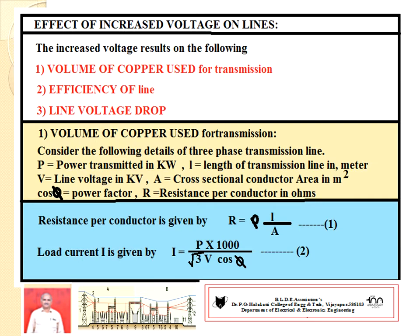For the volume of copper required for a transmission line, consider the following: a three-phase transmission line where P is the power rating in kilowatts, L is the length of the transmission line in meters, V is the line voltage in kilovolts, A is the cross-sectional area of the conductor in square meters, cos φ is the power factor, and R is the resistance of the conductor in ohms.